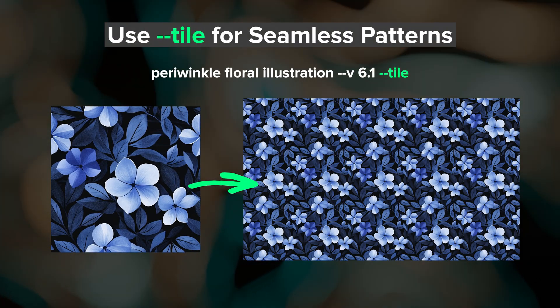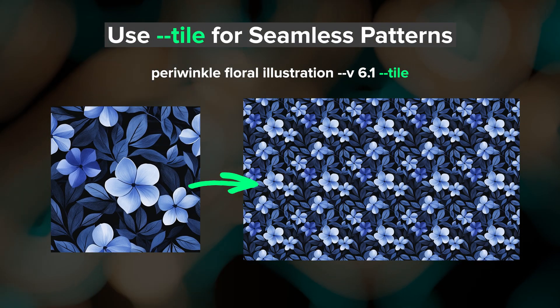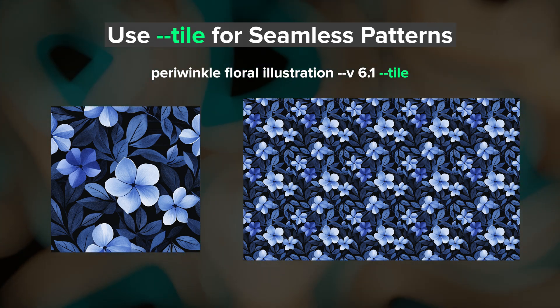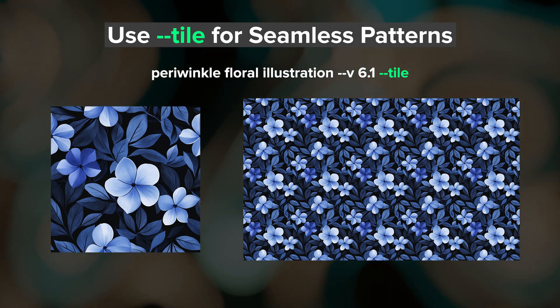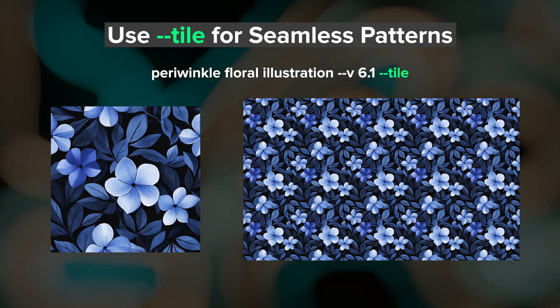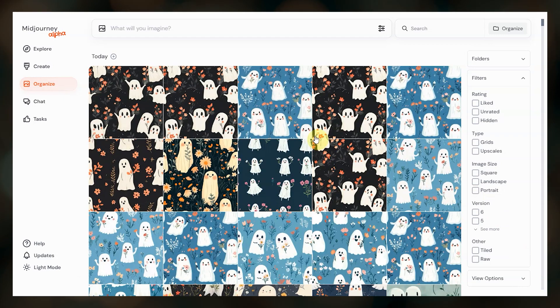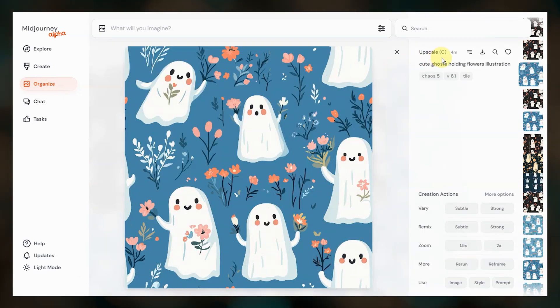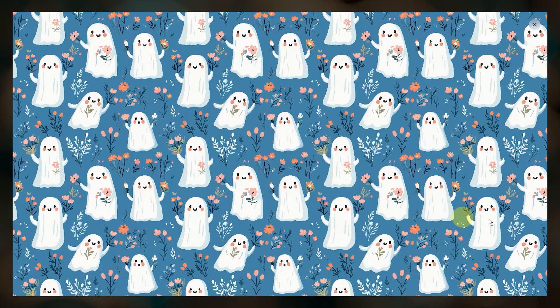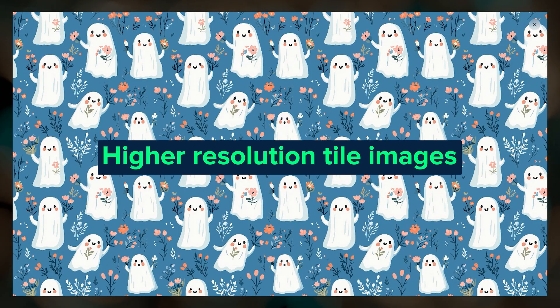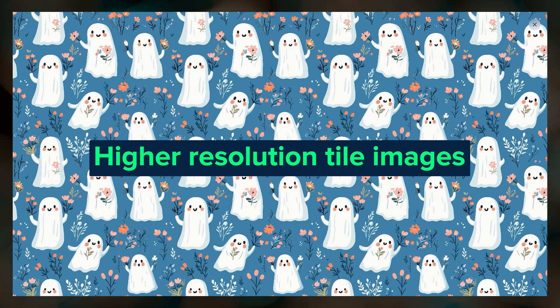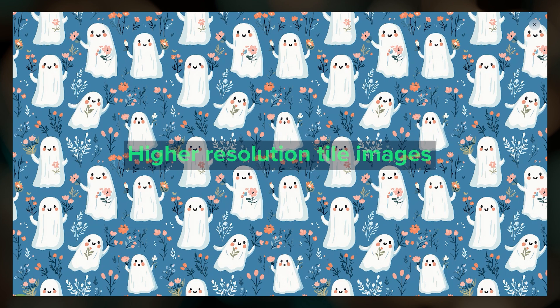If you're familiar with Midjourney's tile parameter, which you can use to create seamless patterns, you'll know that upscaling images often breaks the seamless pattern and the edges don't perfectly line up anymore. This is fixed in 6.1. Tile not only works better, but it works with the new upscalers, so you can create a higher resolution tile and it won't break the seamless pattern.